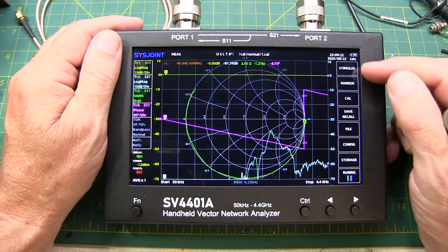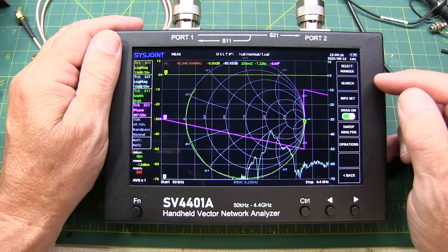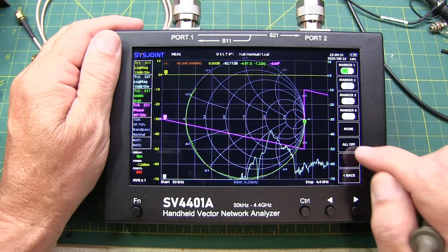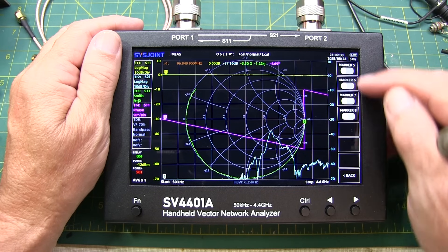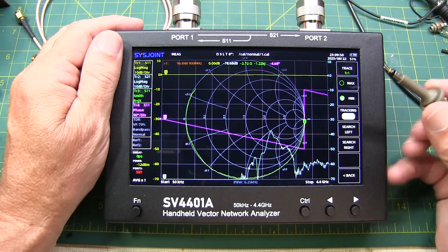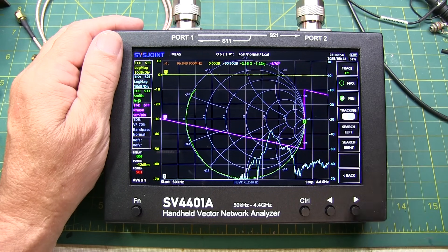The next thing on the top menu is the marker menus. You can actually support up to 8 markers and you can select various markers. So 1 through 4 here, we hit more and we get 5 through 8. The marker search functionality allows you to search for a min or a max, search left or right, etc.